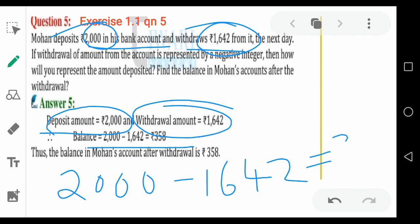358 rupees. So the balance in Mohan's account after withdrawal is 358 rupees. That's it. That's an easy problem, right?